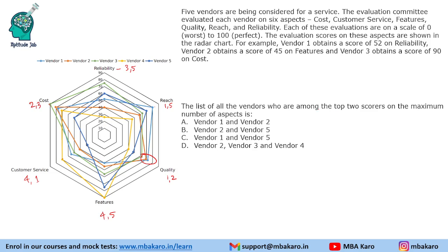Counting how many times each vendor appears in the top two: vendor one appears in reach, quality, and customer service — three times; vendor two appears two times; vendor three appears two times; vendor four appears two times; vendor five appears in reliability, reach, and features — also three times. So vendor one and vendor five both appear in the top two on three occasions, which is the highest count.